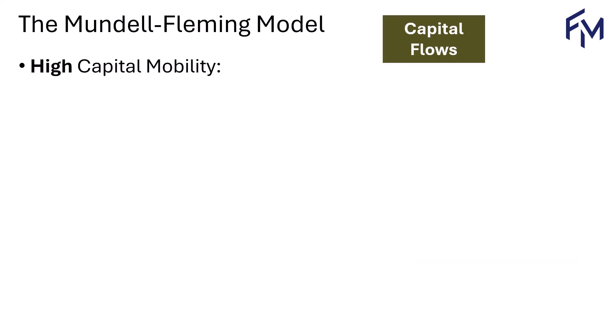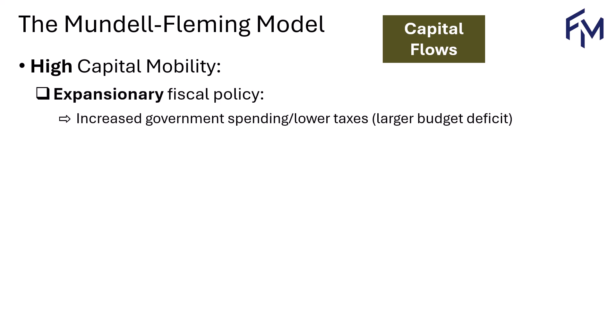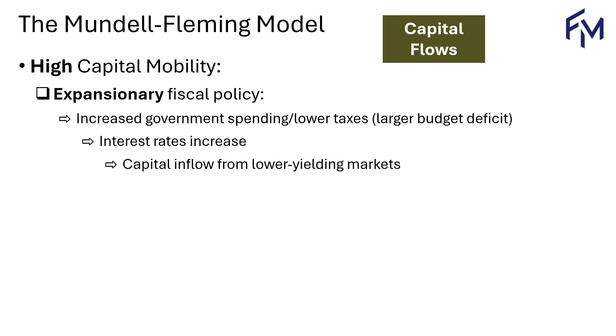When capital mobility is high, fiscal policy affects exchange rates through interest rate movements and the capital flows that follow. With expansionary fiscal policy — meaning higher government spending, lower taxes, or both — the budget deficit increases, and the government has to issue bonds to finance it. With more borrowing, interest rates are pushed up, attracting foreign capital inflows from lower-yielding markets, resulting in higher demand for domestic currency and an appreciation.